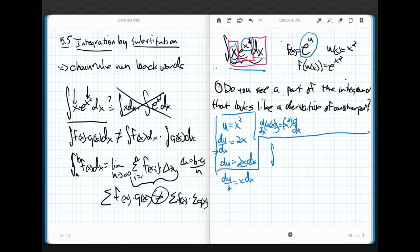So, here we go. Well, I know that x dx is just du over 2. I know that e to the x squared is just e to the u.